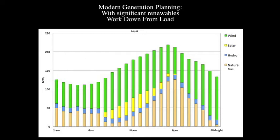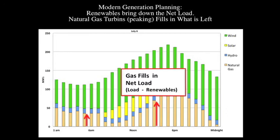Let's look at a particular hour — say, 2 p.m. From where the load is, we take away the wind that's actually running, based on actual wind and solar data. We take away the solar. We take away the hydro. What's left is shown in beige, and that's what we have to make up with natural gas power plants. There's really no place for a power plant that isn't nimble in this picture.